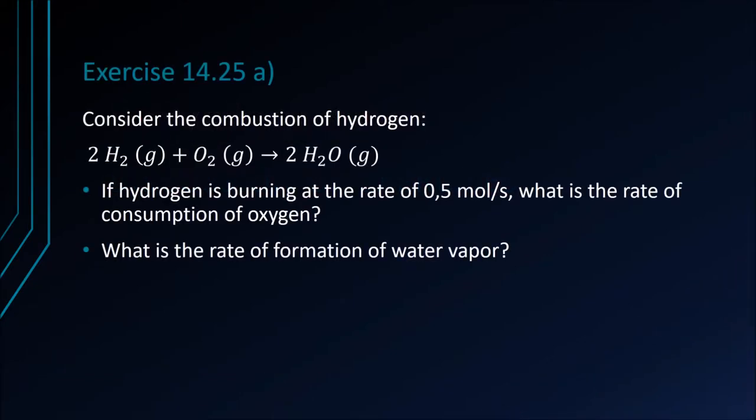Exercise 14.25a. Consider the combustion of hydrogen: 2H₂(g) + O₂(g) → 2H₂O(g). If hydrogen is burning at the rate of 0.5 moles per second, what is the rate of consumption of oxygen? What is the rate of formation of water vapor?